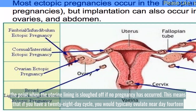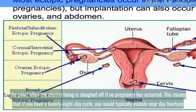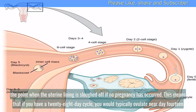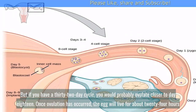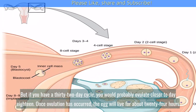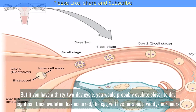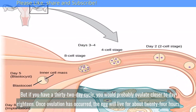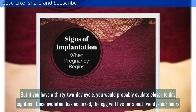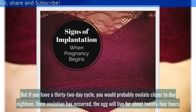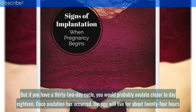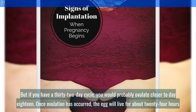This means that if you have a 28-day cycle, you would typically ovulate near day 14. But if you have a 32-day cycle, you would probably ovulate closer to day 18. Once ovulation has occurred, the egg will live for about 24 hours.